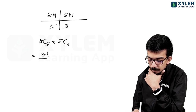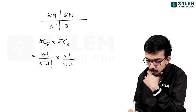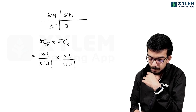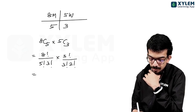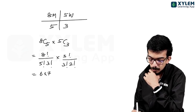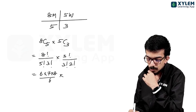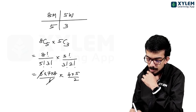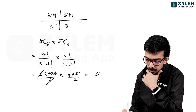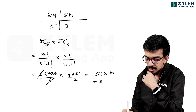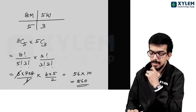This is 8! divided by (5! × 3!) times 5! divided by (3! × 2!). Simplifying: 8×7×6 divided by 6, times 5×4 divided by 2, which gives 56 into 10. So 560 is the right answer.